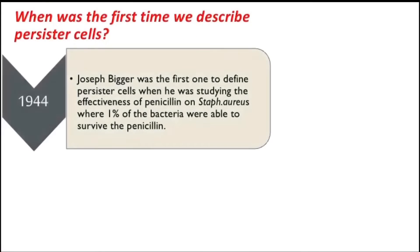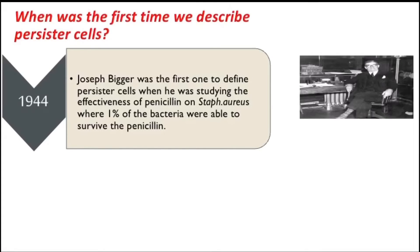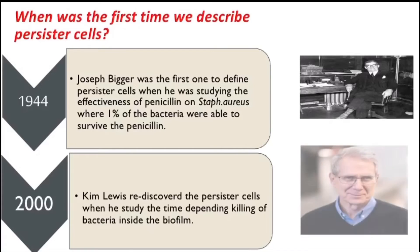In 1944, Joseph Becker was the first to define the persister cell when he was studying the effectiveness of penicillin on Staph aureus, where 1% of the bacteria were able to survive the penicillin. In 2000, Kim Lewis rediscovered the persister cell when he studied the time-dependent killing of bacteria inside the biofilm. That was a brief history about persister cells.